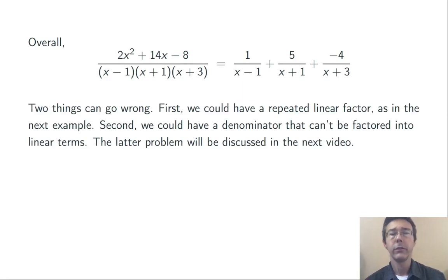There's two different things that can go wrong with this process, at least as we know it so far. First of all, we could have a repeated linear factor in the denominator. So maybe instead of (x - 1) here, I would have (x - 1)². So we have to learn how to deal with that.